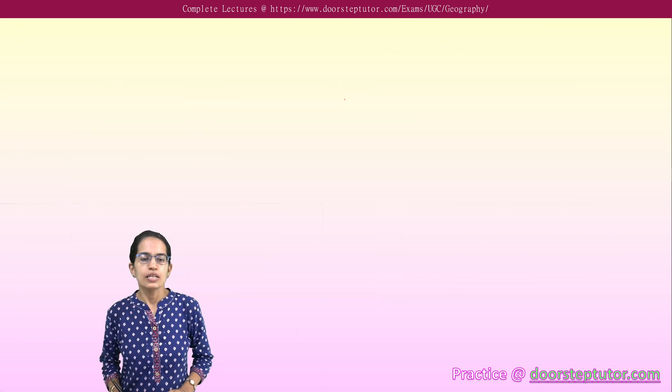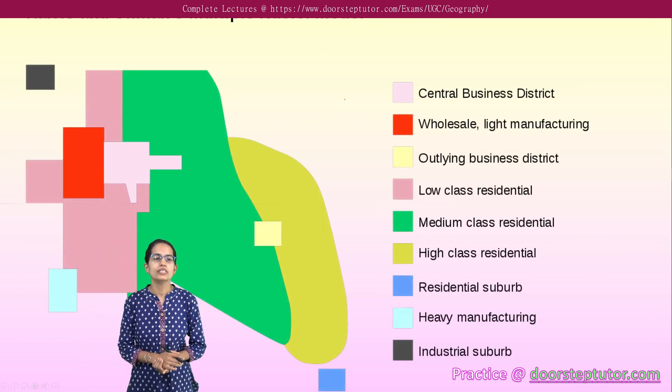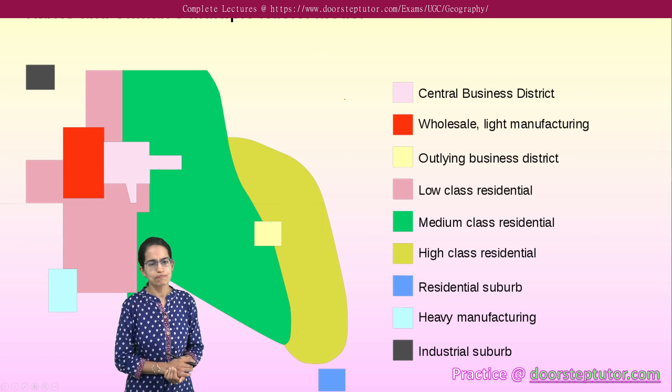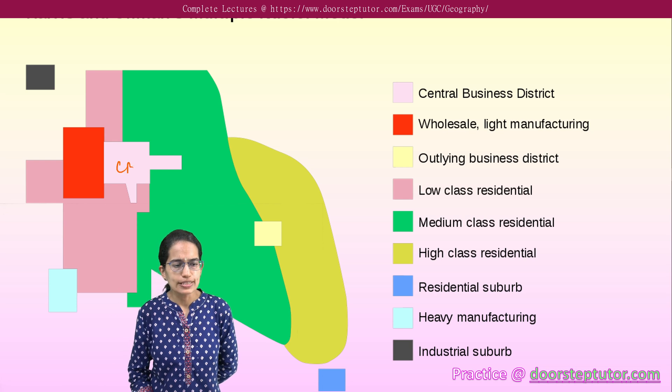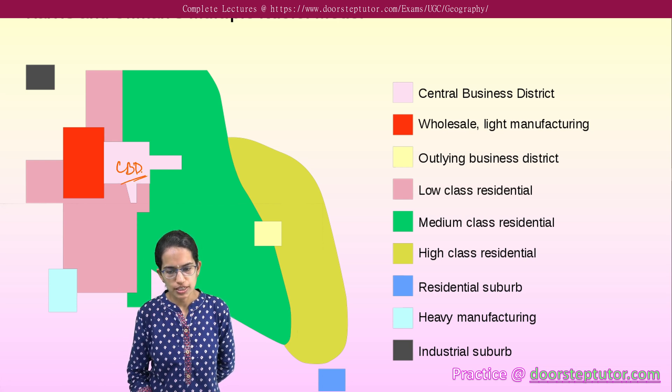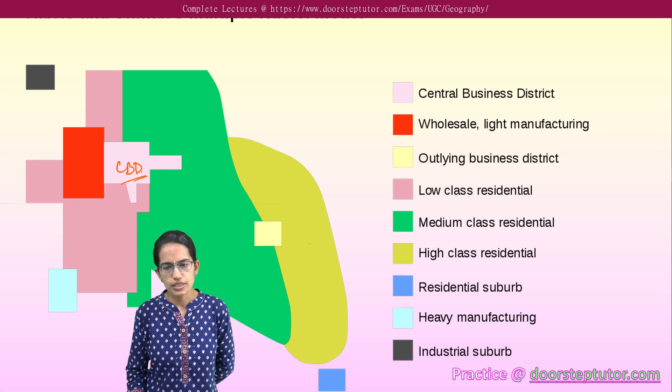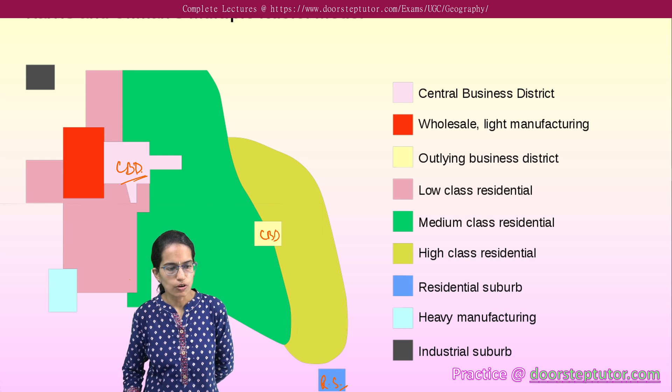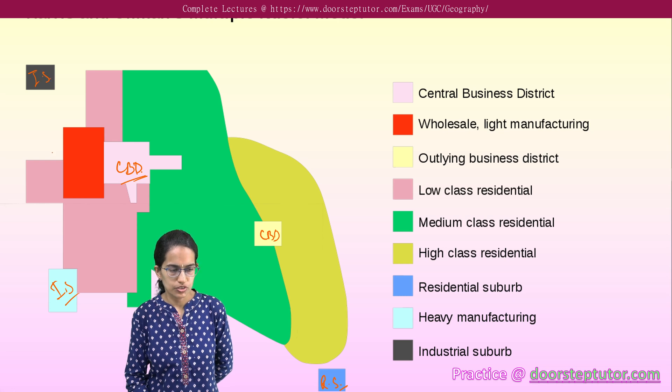Hoyt's model is important. The next model that came in was the Harris and Ullman's model of multiple nuclei. This is one central business district that was there. According to this, there was an outlying central business district that was established, a residential suburb far off, a heavy industrial suburb which is again far off and an industrial suburb which is far off.